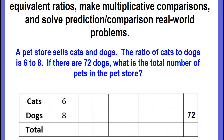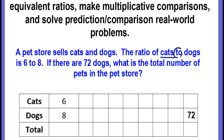Ratio tables can help us find equivalent ratios, make multiplicative comparisons, and solve prediction and comparison real-world problems. Our first situation says that a pet store sells cats and dogs. The ratio of cats to dogs is six to eight. If there are 72 dogs, what is the total number of pets in the pet store? The first important information we're given is the ratio of cats to dogs — it is six to eight in that order.